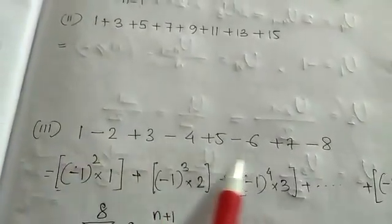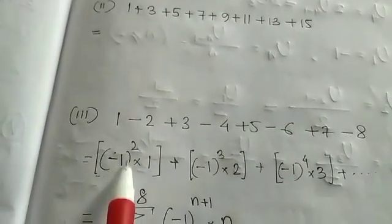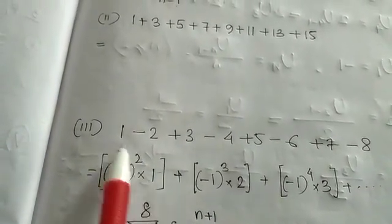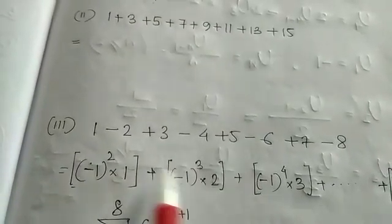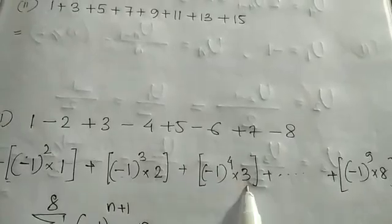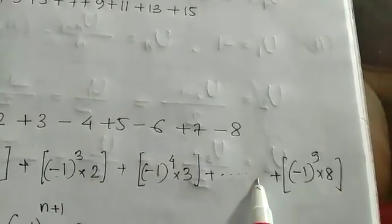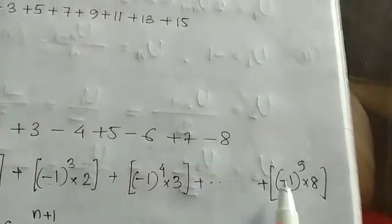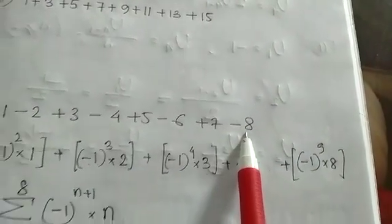Question number 3 looks exactly the same as question number 1, but there is a plus-minus sign repeating. We can see: minus 1 squared times 1 is plus 1; minus 1 cubed times 2 is minus 2; minus 1 to the power 4 times 3 is plus 3; and the last one, minus 1 to the power 9 times 8 is minus 8.